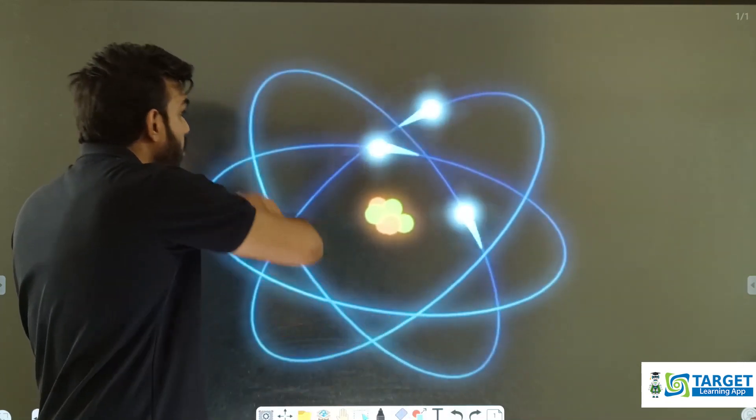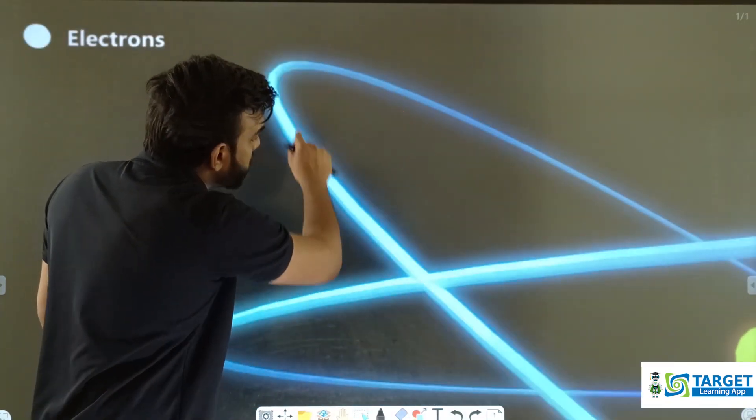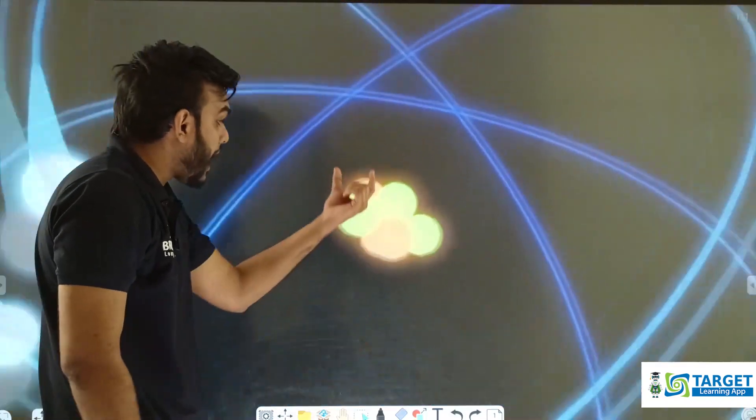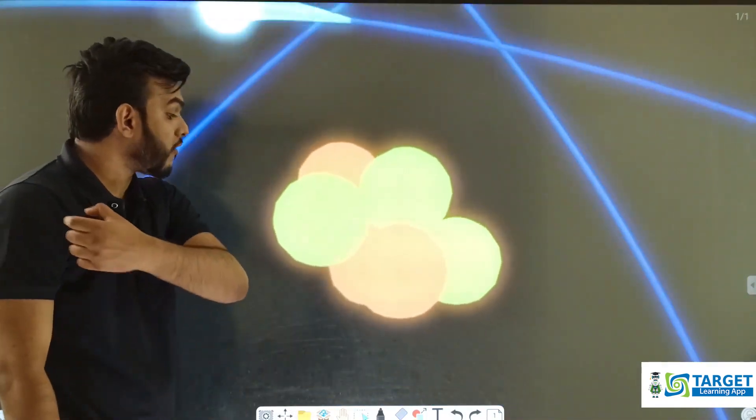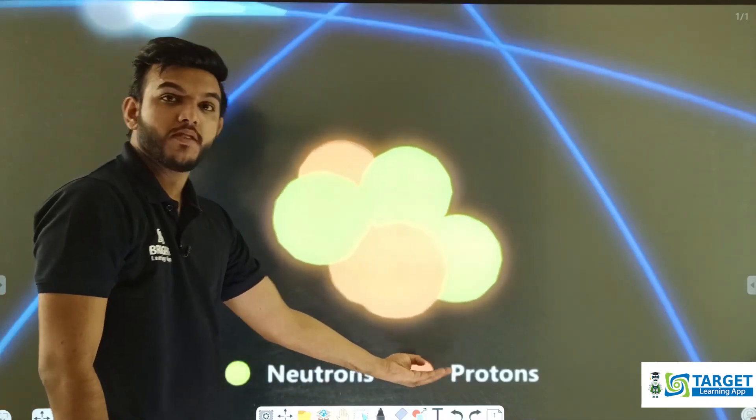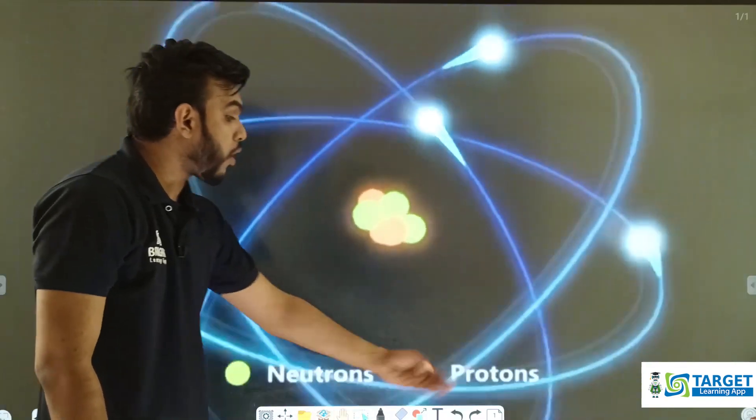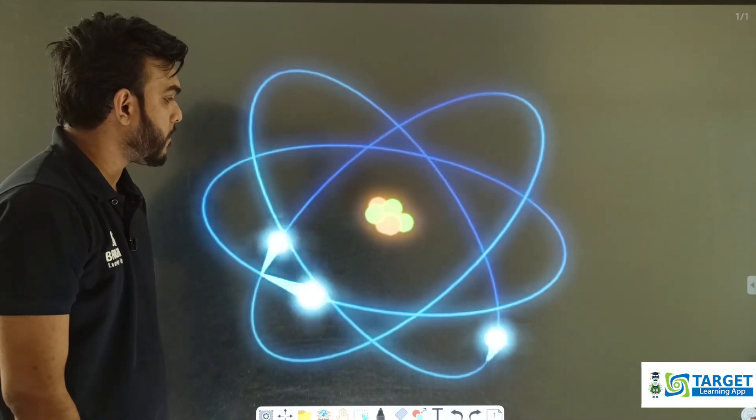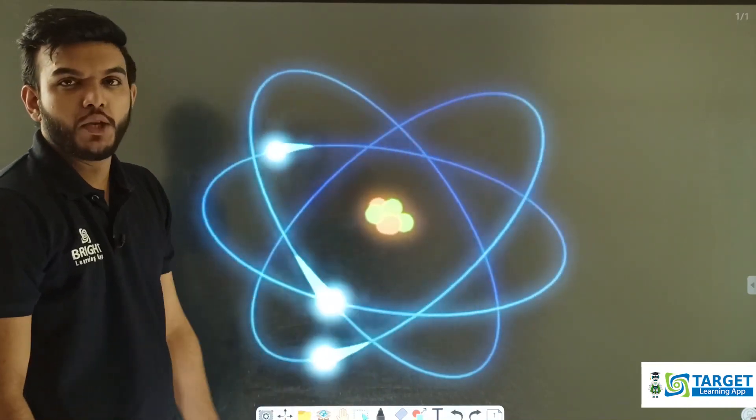The electrons are revolving in particular orbitals. They have a central nucleus that consists of neutrons and protons, where neutrons are chargeless and protons are positively charged. This is the actual structure of the nucleus.